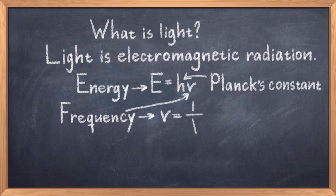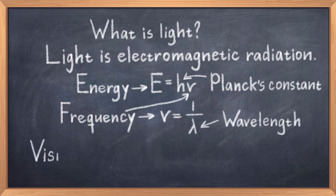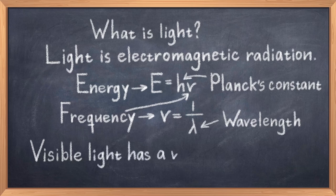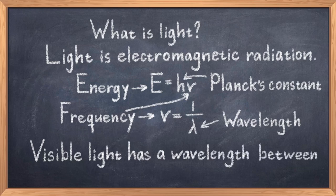We can also describe light by wavelength using the relation between frequency and wavelength, where nu equals the inverse of lambda, where lambda is the wavelength. Thus, the lower the wavelength, the higher the energy. As mentioned already, light can be many things. But visible light is just electromagnetic waves, with a wavelength between 380 and 780 nanometers.